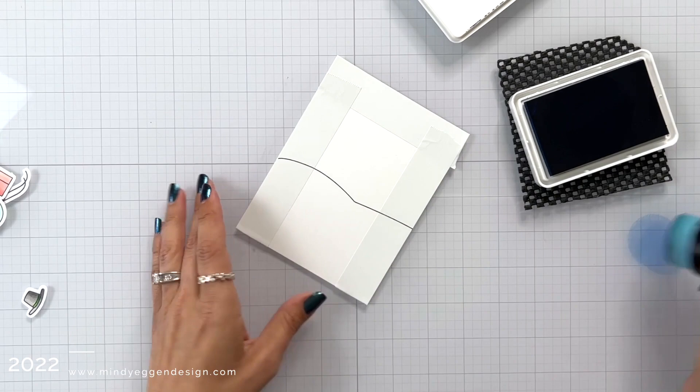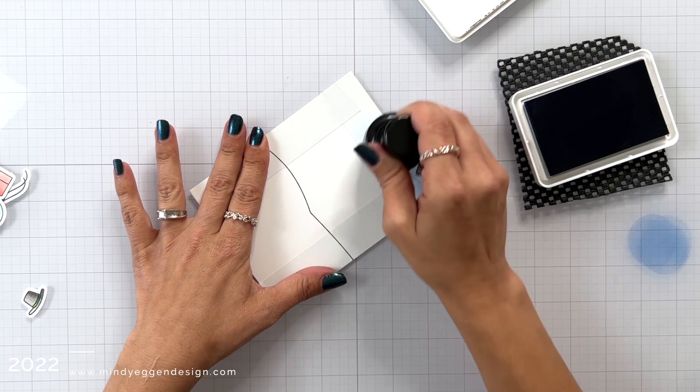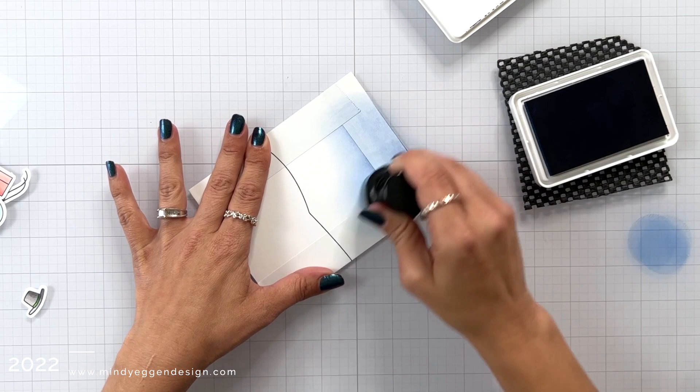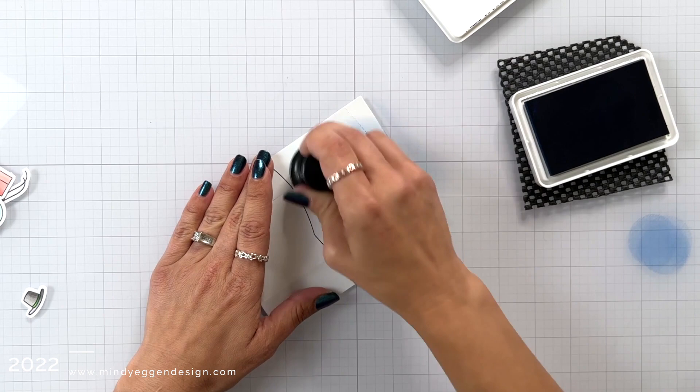So after I stamped that, which is also stamped over that masking area, I'm going to bring in the color Twilight. I'm trying to use ink colors that I don't normally grab, and this one is super pretty. I'm going to start at the top that has the post-it tape at the top, and I'm blending it with a flat blending brush.